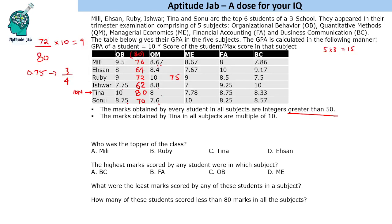With maximum 75, one GPA point equals 7.5. So 8 × 7.5 = 60. For 8.67, that's 26/3 × 7.5 = 65. For 8.4, that's 3/4 × 84... giving 63. And 57 for the remaining value. So QM maximum marks are 75.